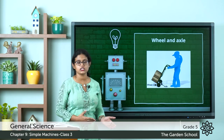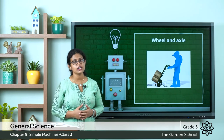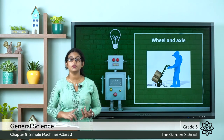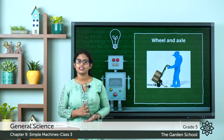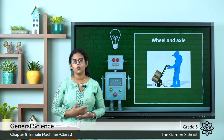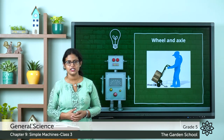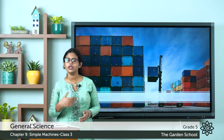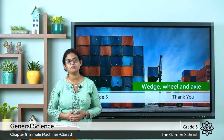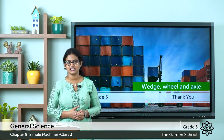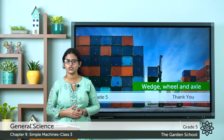Today we discussed two types of simple machines — the wedge and the wheel and axle. In the next class we'll discuss the remaining types of simple machines. Thank you, and see you in the next class.